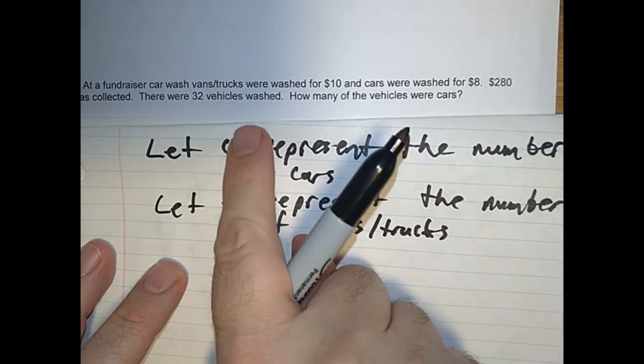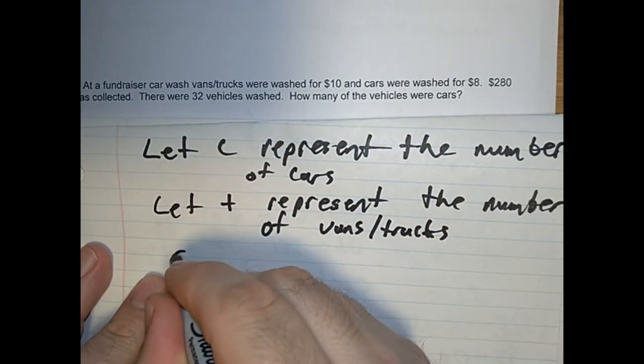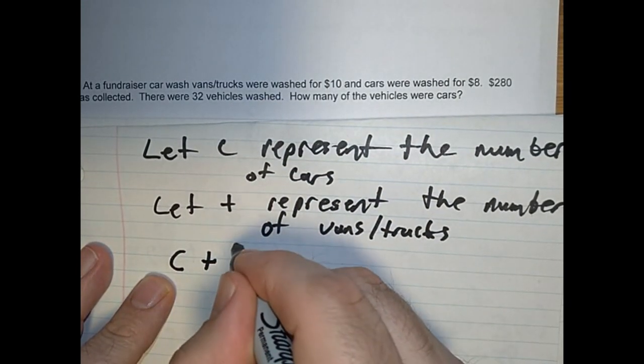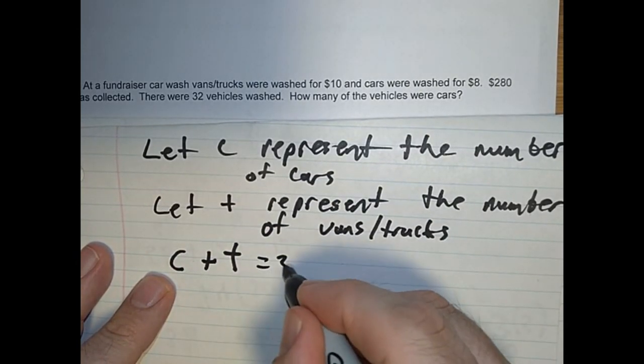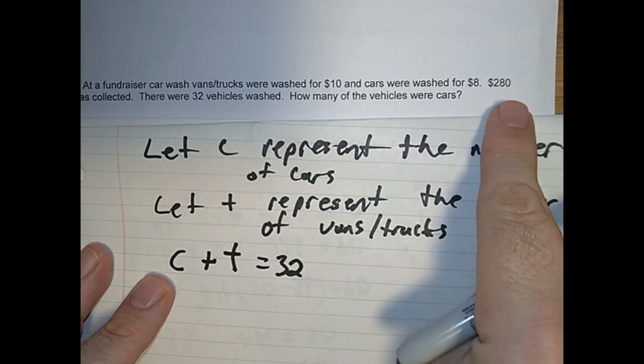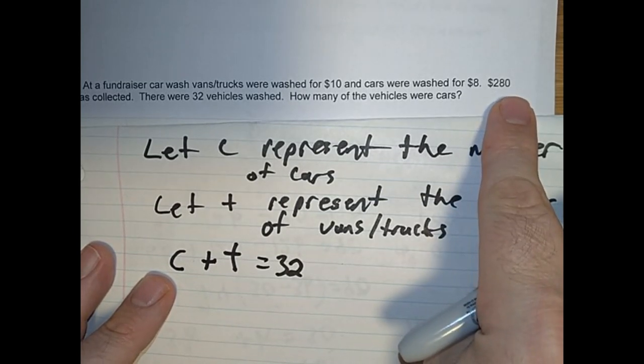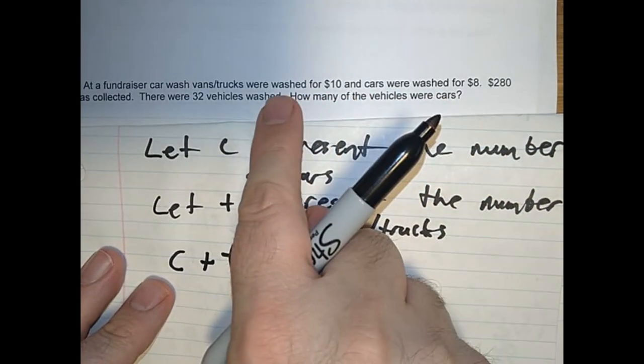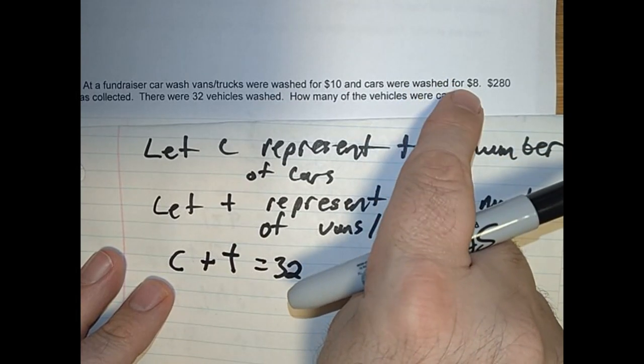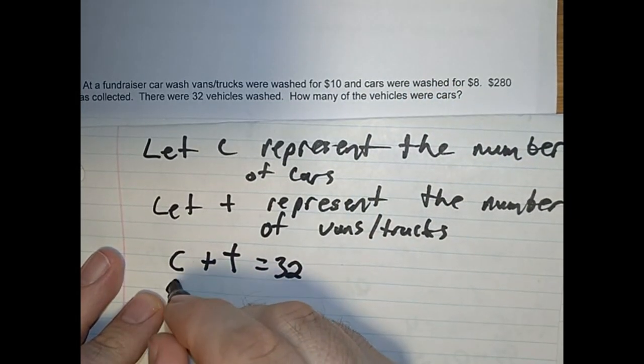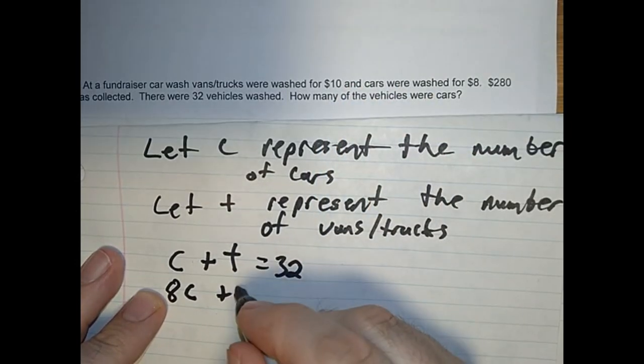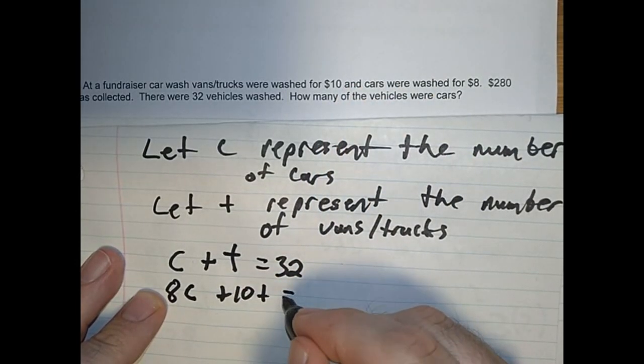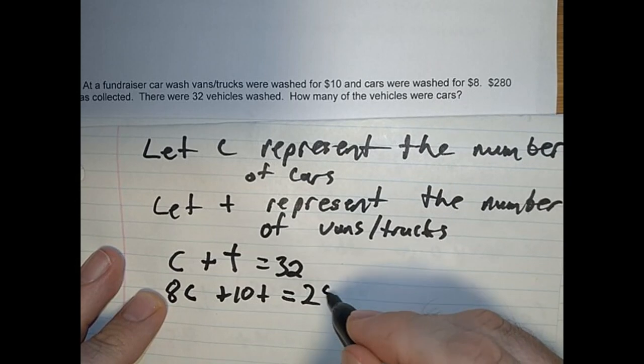So we know 32 vehicles were washed. C plus T has to equal 32. Now we also know $280 was collected, but each car, this is a tricky one, each car cost $8. So 8 times the cars and $10 times the trucks equals 280. This was a very hard question.